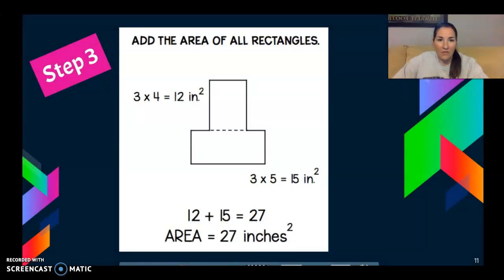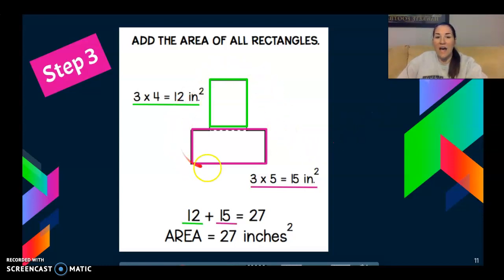My last step to try and find the area of the entire irregular shape is I'm just going to simply add the area of those smaller rectangles together. So we had that green one was three times four equals 12. We had the pink one was three times five equals 15. So if I add the area of the green rectangle and the area of the pink rectangle, 12 plus 15 equals 27. So the area of this entire shape is going to be 27 inches squared.